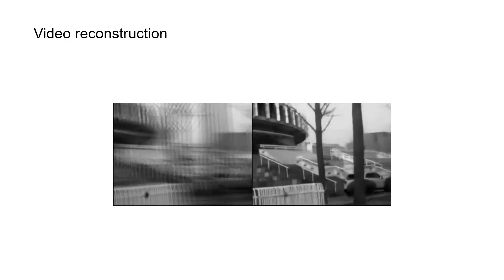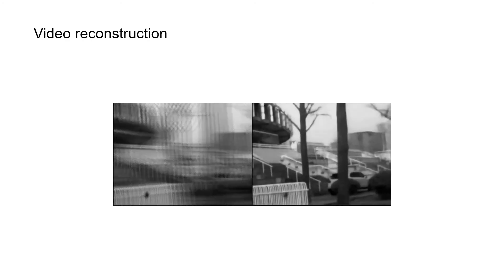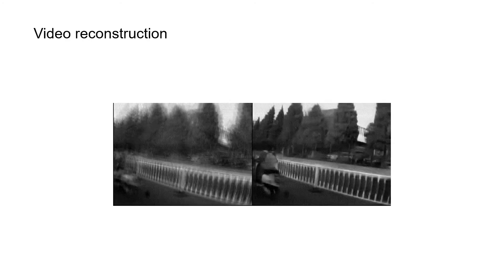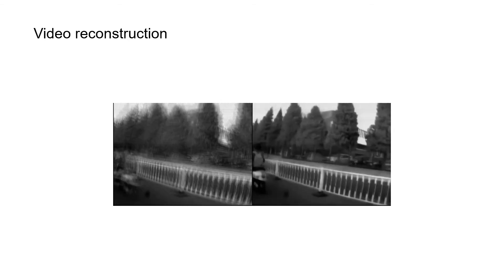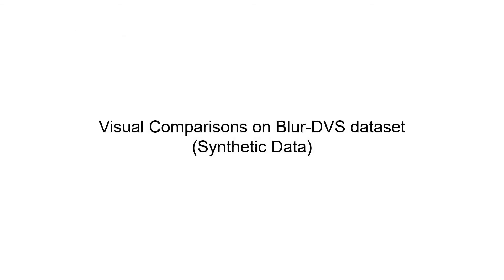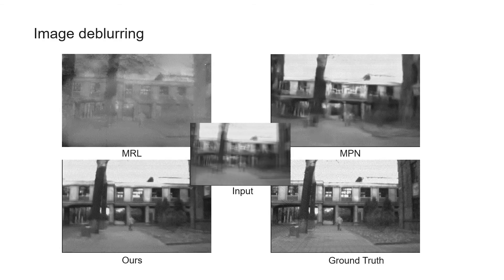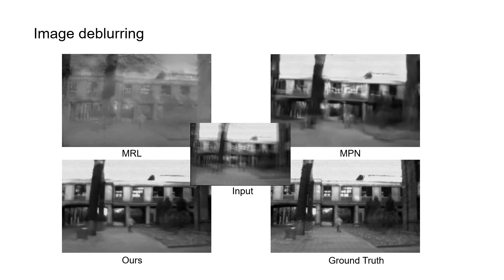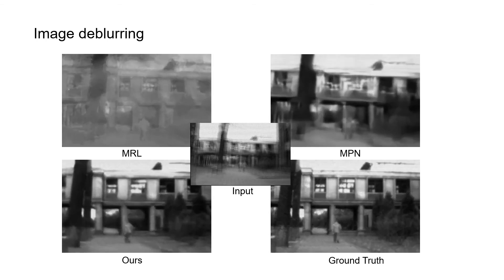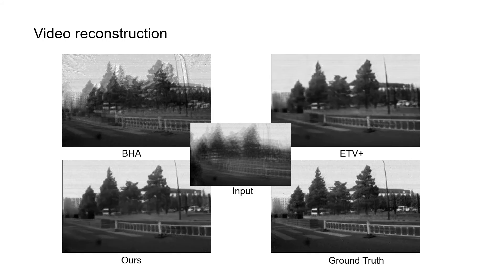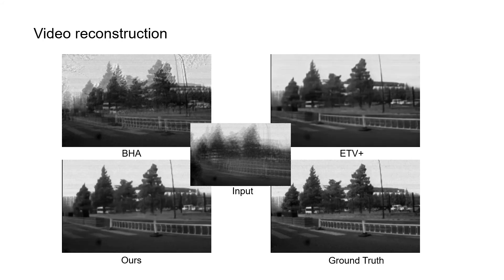Here are some of the results. Given this severe motion-flared image, our work can recover a sharp video sequence with multiple frames depicting the same details accurately. We show visual comparisons on two fast-moving scenes. Our approach generates cleaner and sharper results on both image-flared, as well as video reconstruction.